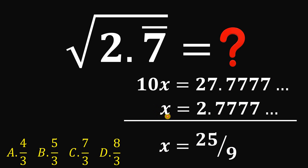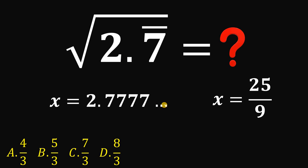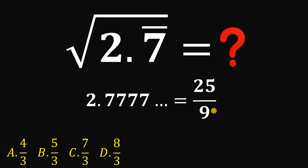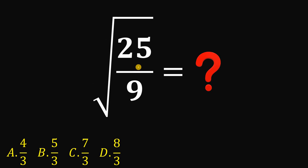Now at this point we have the value of x, but we have two different representations. The first one is 2.77777 until infinity, or 2.7 repeating, and the other one is 25 over 9. It means that 2.77777 until infinity is simply equivalent to 25 over 9. So we can replace 2.7 repeating with 25 over 9. And notice that 25 is 5 squared, and 9 is 3 squared.